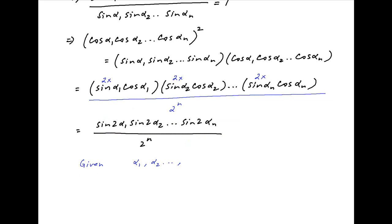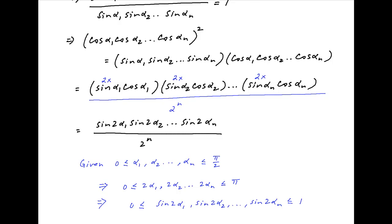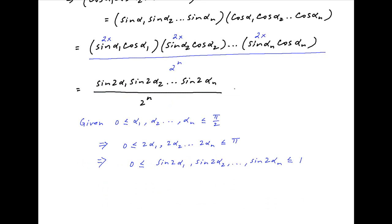Now we are given that the angles α₁, α₂, ... , αₙ lie between 0 and π/2. Therefore, the angles 2α₁, 2α₂, ... , 2αₙ lie between 0 and π. Therefore, the maximum value of sin(2α₁) · sin(2α₂) · ... · sin(2αₙ) is 1. Therefore, the numerator of the above expression can achieve a maximum value of 1, and the above expression is always less than or equal to 1/2^n.